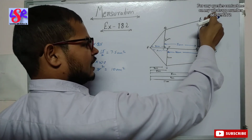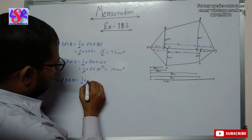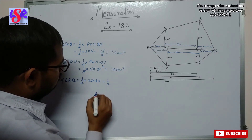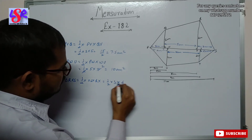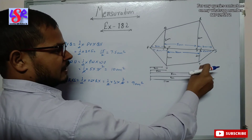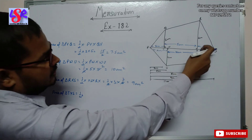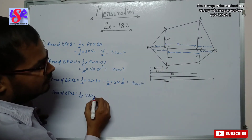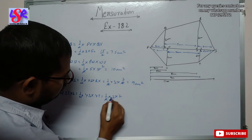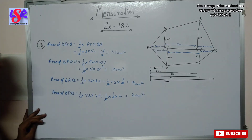The area of triangle RXS equals 1/2 into base XS into height RX, which is 1/2 into 3 into 6. This simplifies to 9 square centimeters. The area of triangle TYS equals 1/2 into base YS into height YT, which is 1/2 into 2 into 2. This gives 2 square centimeters.